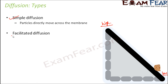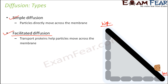The next type of diffusion is facilitated diffusion. The word facilitated is related to the term facilitator — to facilitate means you need somebody else to facilitate the movement, like a facilitator in an examination center who is there to assist you. In facilitated diffusion, the movement of particles across the concentration gradient does not happen by itself. Transport proteins help particles to move across the membrane. These special proteins carry particles from region of high concentration towards region of low concentration, which is why they are known as facilitators. This type of diffusion is called facilitated diffusion.